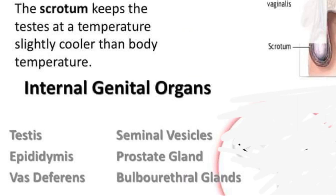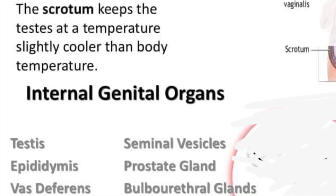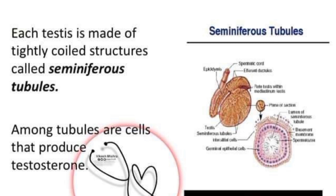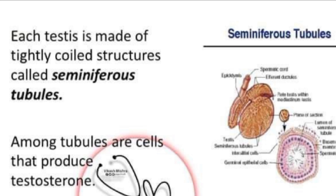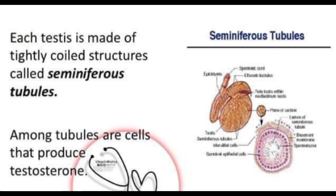Now let's discuss the internal genital organs. The testes or testicles are oval organs about the size of a very large olive. They lie in the scrotum, secured at either end by a structure called the spermatic cord. Each testis is made up of tightly coiled structures called seminiferous tubules. The testes are responsible for making testosterone, the primary male sex hormone.